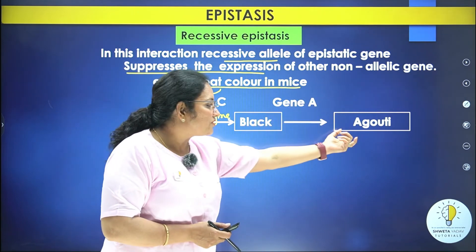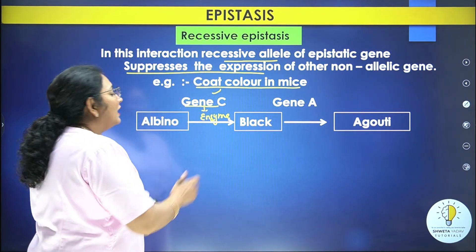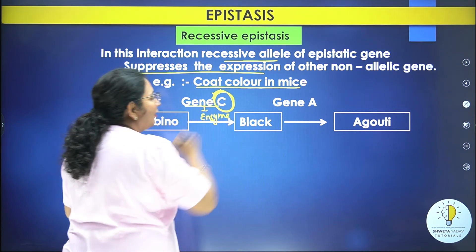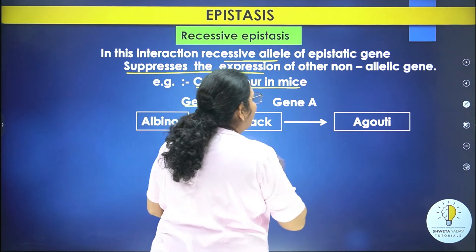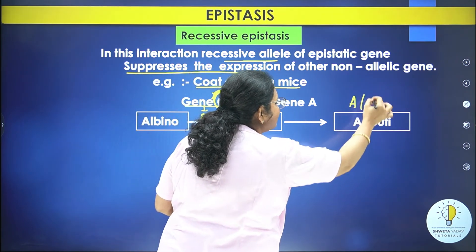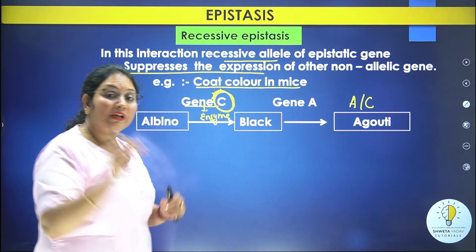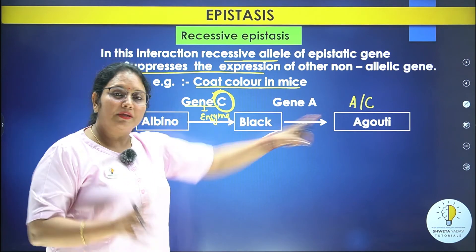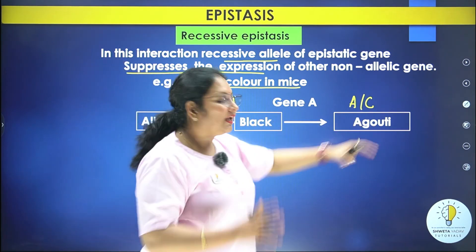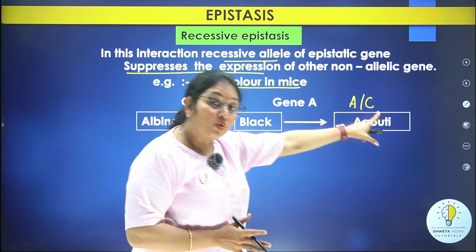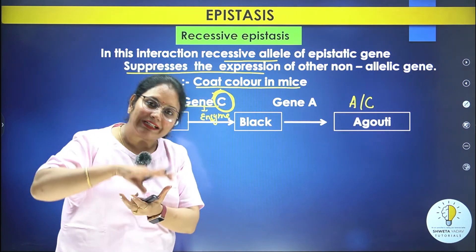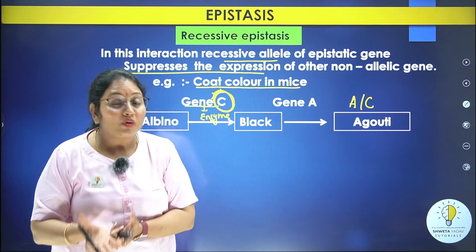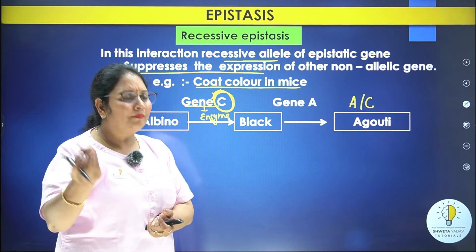So to make only black color, gene C (in dominant form) is required. To make agouti (brown coat), both gene A and gene C (dominant) are required. For albino (white), no dominant allele is needed — recessive alleles are sufficient. So agouti requires both A and C dominant; black requires only C dominant; and albino needs neither dominant.